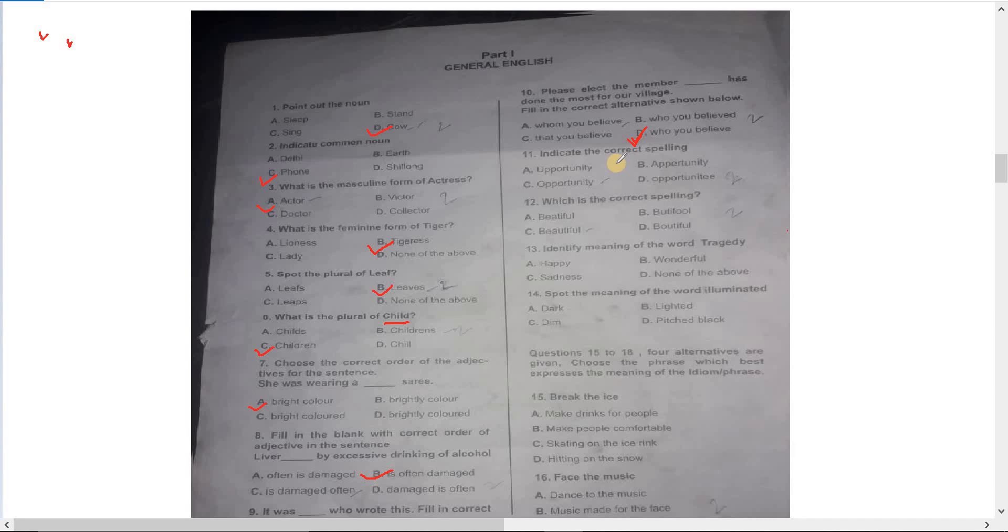Number eleven: indicate the correct spelling. You can select if you know. Opportunity is spelled O-P-P-O-R-T-U-N-I-T-Y, number C. Number twelve: which is the correct spelling? Beautiful, B-E-A-U-T-I-F-U-L, number C.